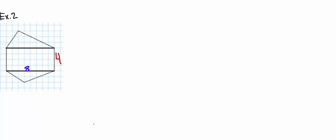Now we also need to know the base and height of our triangles. The formula for a triangle is area equals one-half base times height, and the formula for a rectangle is area equals base times height. We know the bases for our triangles are 8, the same as our rectangle's base. We don't know our height though. Looking at the top triangle, it makes a nice right triangle — we count the height, which is 3. For the bottom triangle, we split it and get a height of 2.